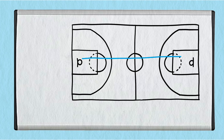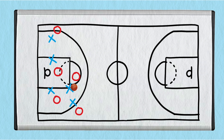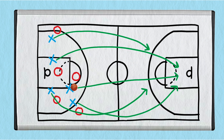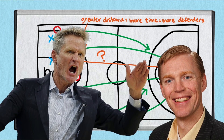My basketball coach always emphasized that on fast breaks, players without the ball should run wide. The increased distance between the offensive players makes it more difficult for one defender to guard multiple players. But it also takes more time to run out wide, which gives the defense more time to set up and get more defenders down the court. So wouldn't it be better to take the shortest path and run down the middle of the court? Then I'd have a better chance of beating the defensive players before they get in position. Am I right or is my coach right?